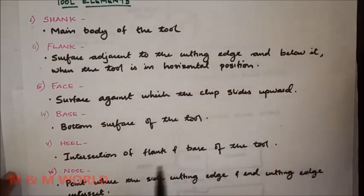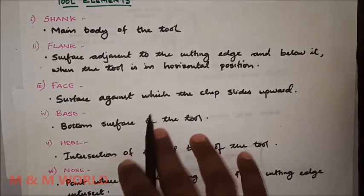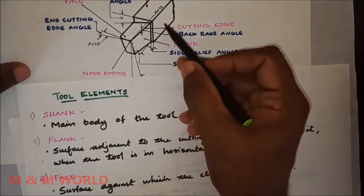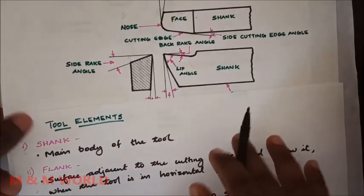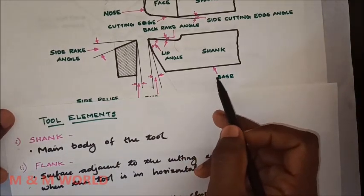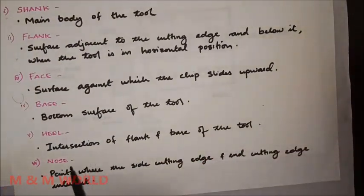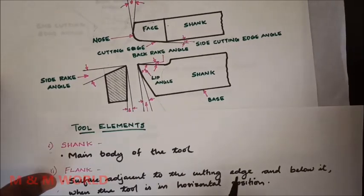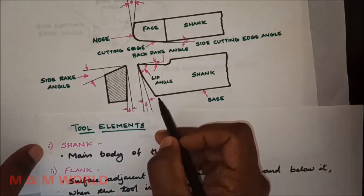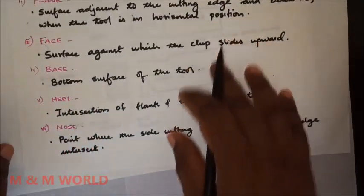The next element is the base. The base is the bottom surface of the tool — the underside of the shank. Following that is the heel, which is the intersection of the flank and the base of the tool.